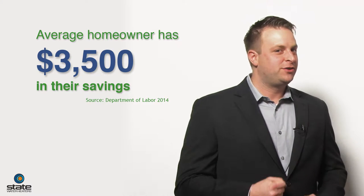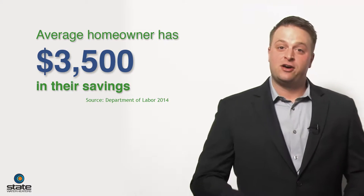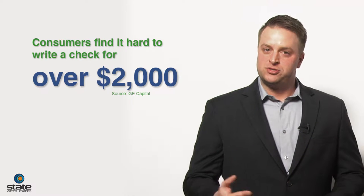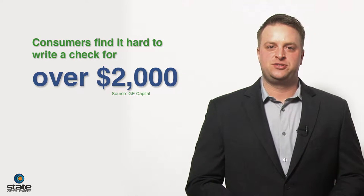Homeowners have on average $3,500 in their savings account. They also find it tough to run a check for over $2,000. So for you as a contractor, how do you combat these issues?